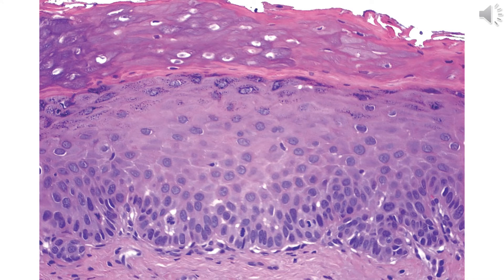An example of mild dysplasia shows loss of polarization at the basal layers, nuclear pleomorphism, variation in cell size, and increased mitotic activity limited to the lower one third of the thickness of the epithelium.